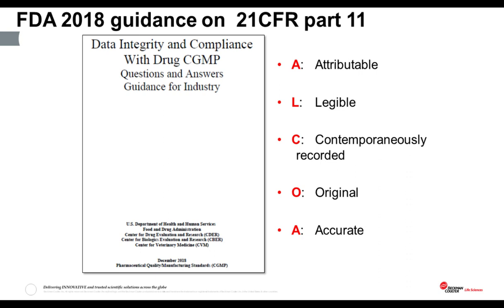In their 2018 question and answers paper on interpreting their data integrity guidance, the FDA introduced for the first time the acronym ALCOA. In response to a question about what a good electronic record looks like, they said it should be Attributable — the first A in ALCOA — to the person taking the sample. It should be Legible, which implies handwriting is probably not the right way to go. It should be made Contemporaneously — at the same time the sample is taken, rather than later from paper printouts. And the record should be the Original record, and the data it contains should be Accurate.